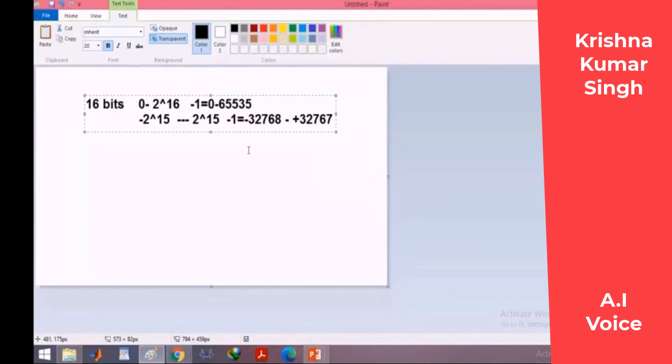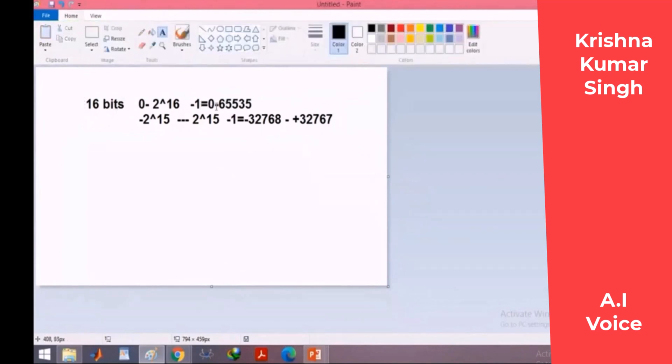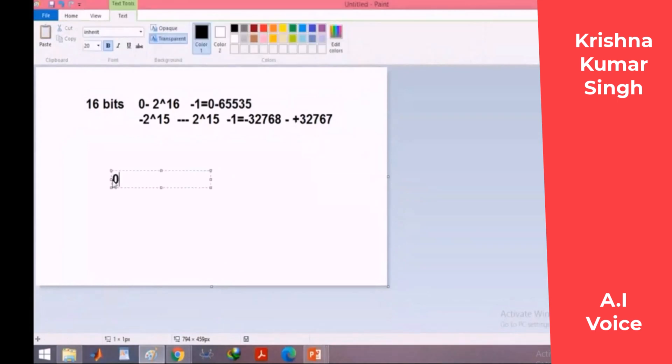Let me write the number in hexadecimal: F, F, F, F, or 16 ones in binary. What is the interpretation of this number? What is this number? What is the meaning of this number? What is the equivalent of this number in decimal?